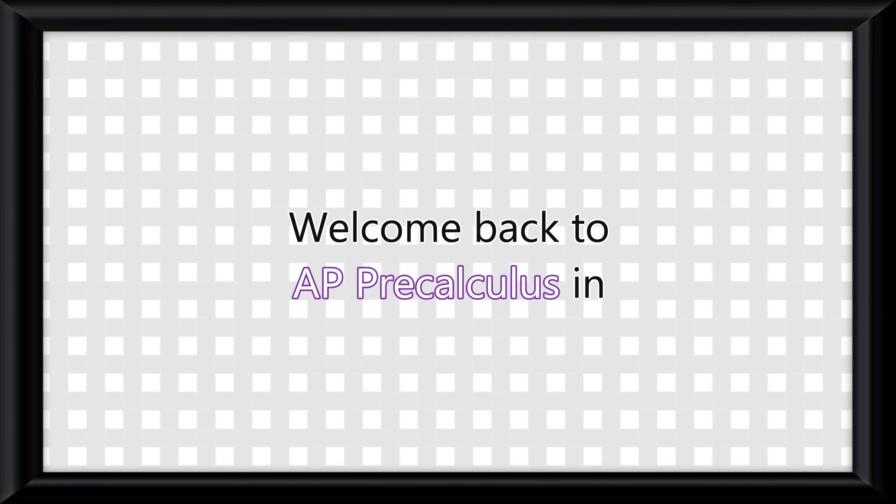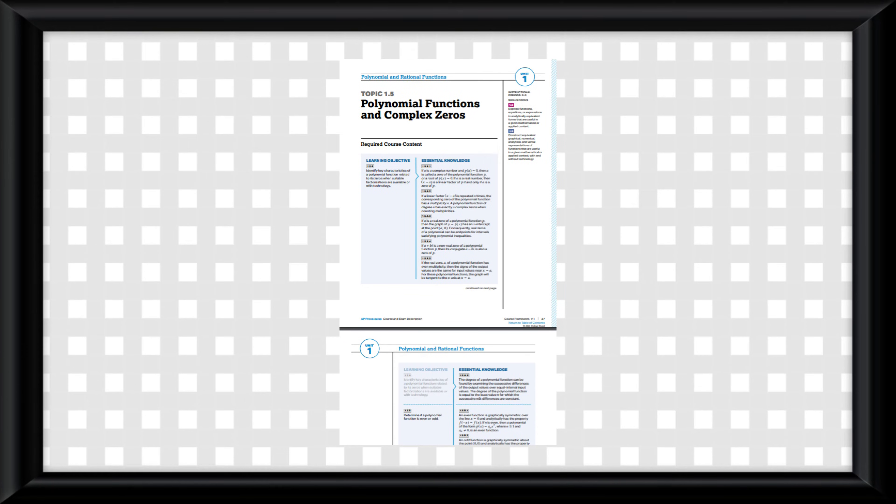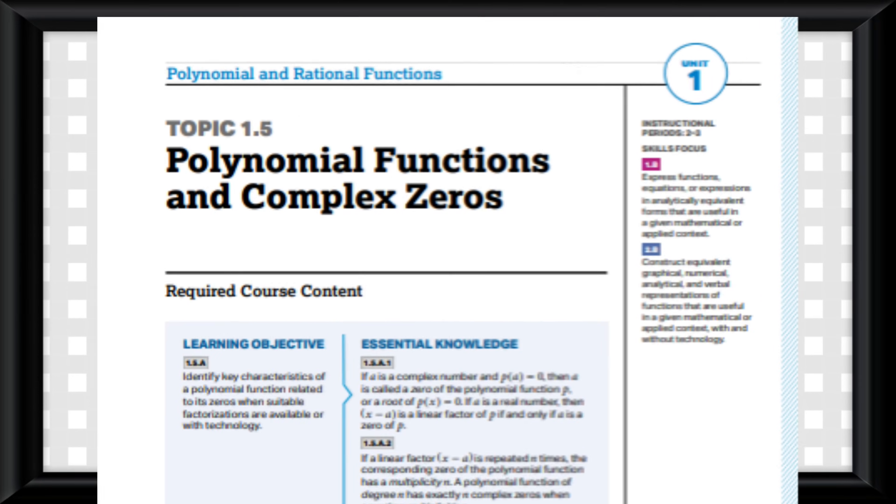Welcome back to AP Precalculus in under 3 minutes. No time for intros, let's get into it. Topic 1.5 is all about polynomials, multiplicity, degree, and even slash odd. This topic is actually very easy to understand.